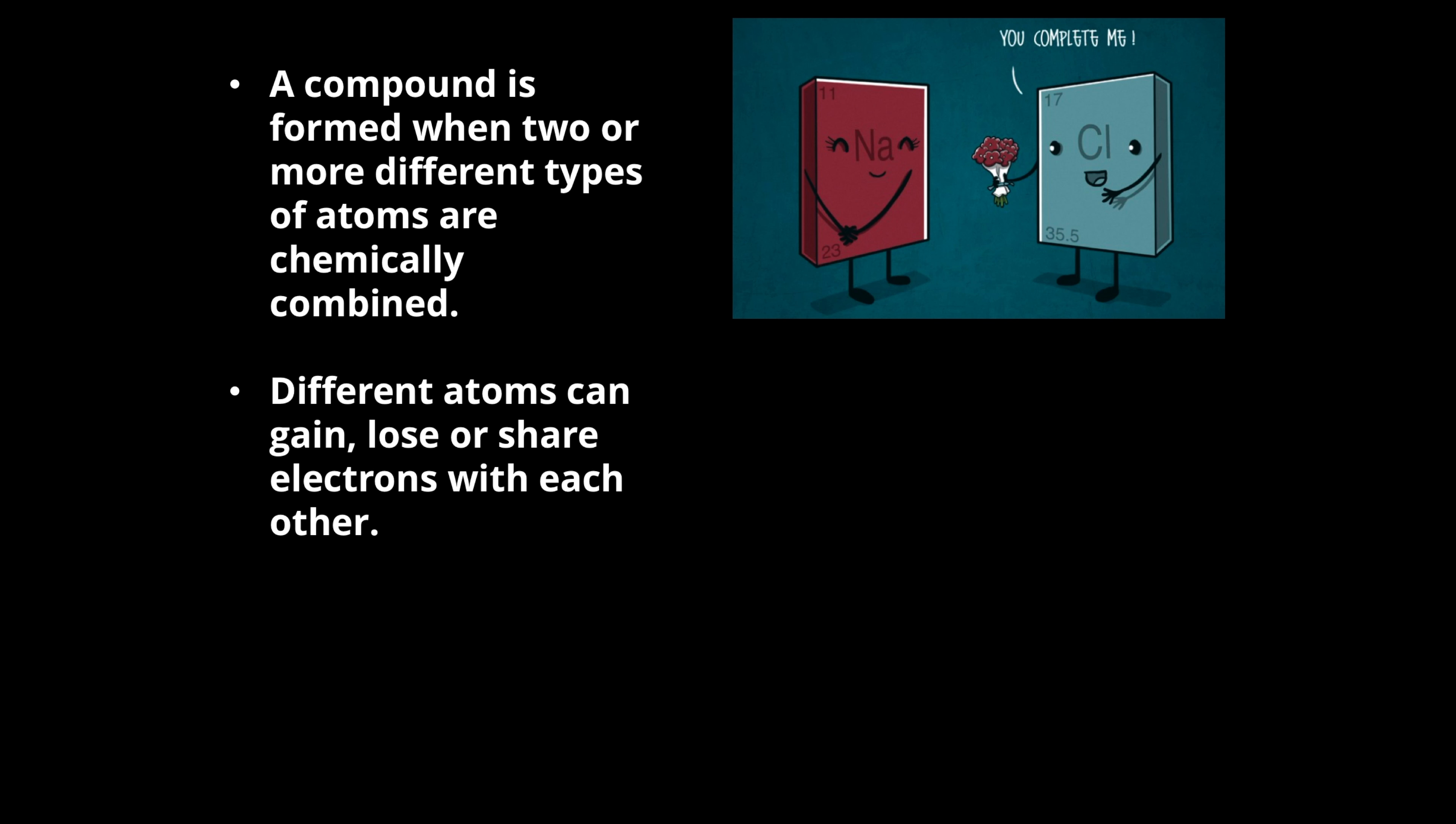In the formation of sodium chloride, the sodium atom loses one electron to form a sodium ion, while the chlorine atom gains an electron to form the chloride ion.